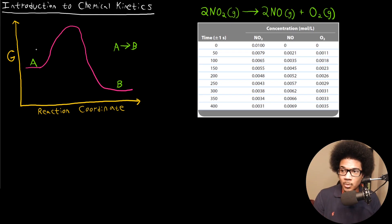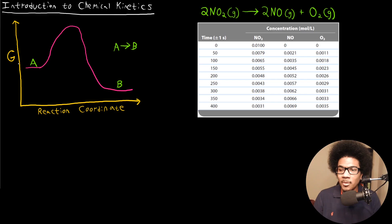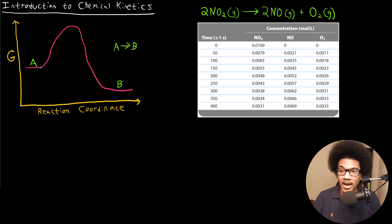A very handy visual representation of a chemical reaction is what's known as a reaction coordinate. What I've shown here is a reaction coordinate for a reaction where reactant A becomes product B. The Y-axis usually has some sort of energy — here I have free energy, but it could also be enthalpy or potential energy. The X-axis is the reaction coordinate, or reaction progress — the progress from reactant to product. The energy increases as the reaction proceeds because it has to overcome what's known as an activation energy barrier.